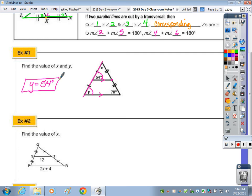Corresponding angles are congruent. And looking at this transversal, if this angle is 78, this angle is 78, and then the 3 angles of the triangle at the top add up to 180. 54 and 78, the sum is 132. Subtract 132 and X is equal to 48.